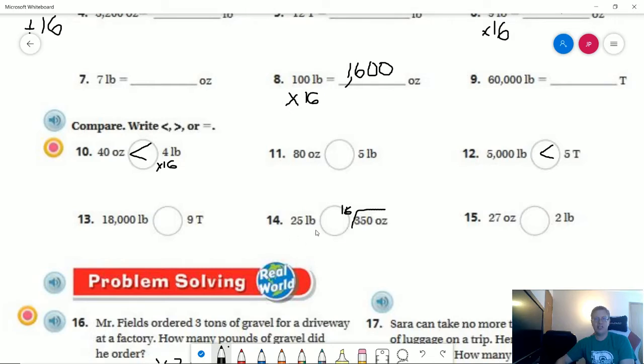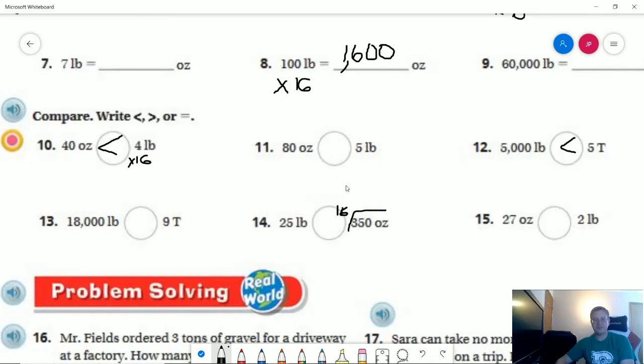Number 14, there are 16 ounces in a pound for weight. A common mistake, which is one that I occasionally make, is thinking the eight ounces in a cup. Ounces for weight we're counting 16. Ounces for measurement of liquids we would use eight.